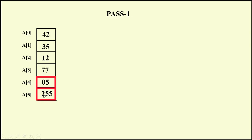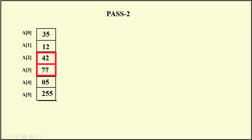After Pass 1, the last element is the largest and is sorted, so no need to consider it again in future comparisons. In Pass 1 we used n minus 1 comparisons; in Pass 2 we go to n minus 2 comparisons. Starting Pass 2 from the beginning: compare 42 with 35 — larger/smaller, exchange. Then 42 with 12 — exchange. Then 42 with 73 — no exchange. Then 77 with 05 — exchange. End of Pass 2: the second largest element is now sorted.